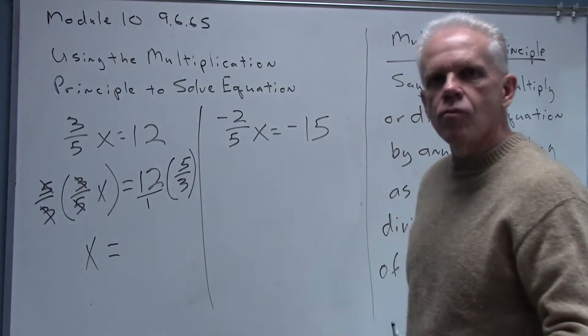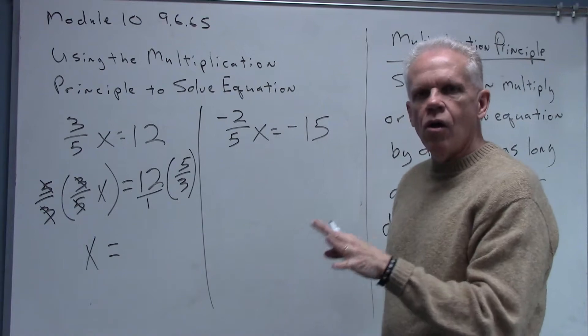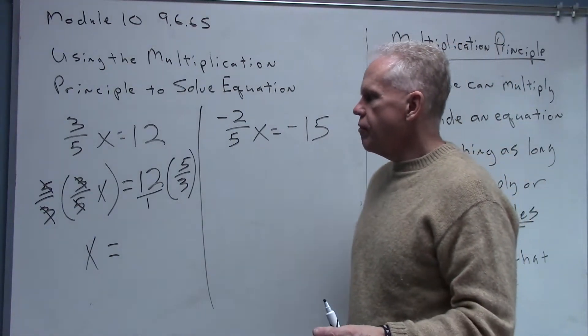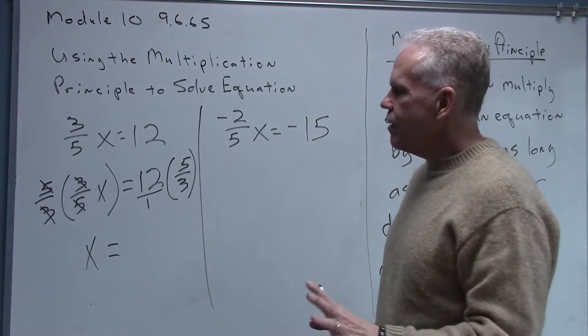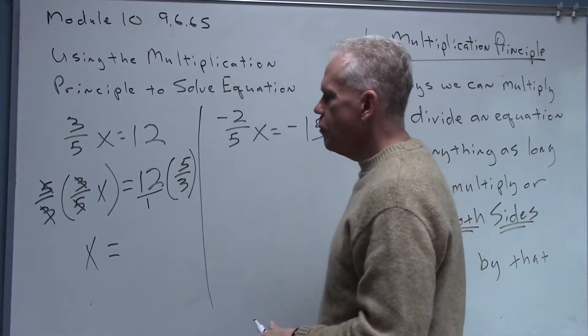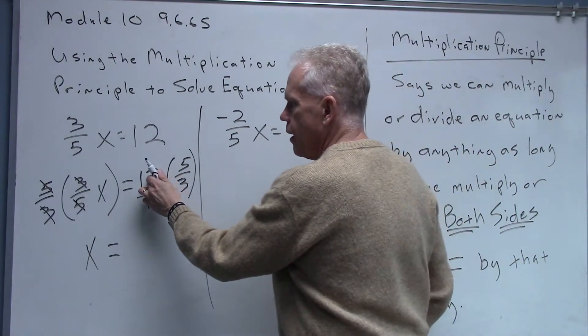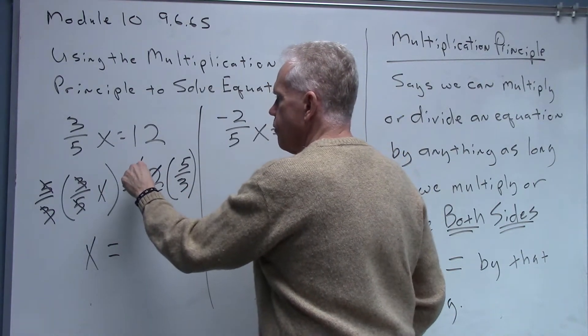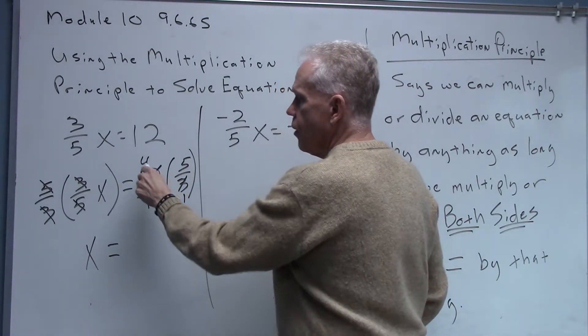Then I'm going to look for anything I can simplify, anything that I can cancel, cross-cancel here that'll help me. So I see the top twelve, the bottom three. Three goes into twelve four times and three goes into three one time. And so four times five then is 20, and one times one is one.